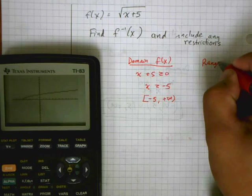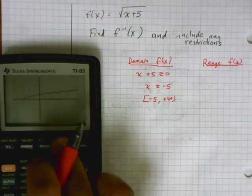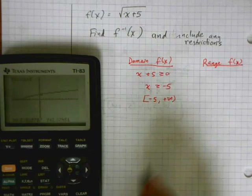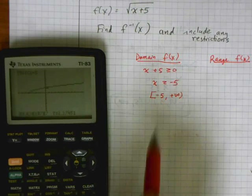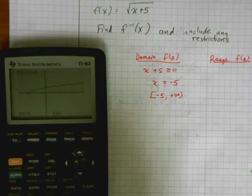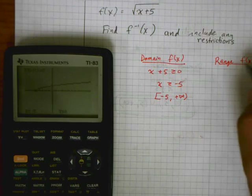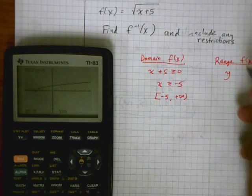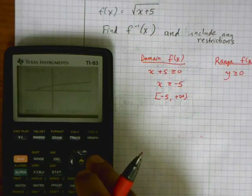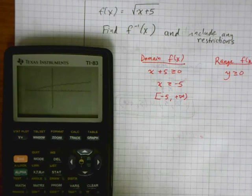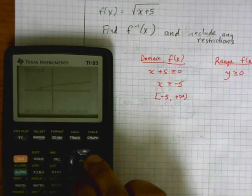Now let's find the range of f of x as well. From the graph, if I hit trace, the x values can never be less than negative 5, so negative 5 is as low as I'm allowed to go. If I go all the way down to negative 5 for the x values, the y value is going to give me 0. So for the range, y has to be greater than or equal to 0, because I start out at y equals 0 right here.